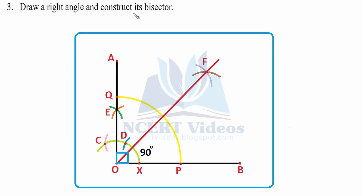Question 3: Draw a right angle and construct its bisection. First make a line segment at O, then draw a semicircle with a reasonable radius. Draw 60 degrees by opening radius OX, then from D another 60 degrees at C. The bisector between them gives 90 degrees. From D and C with the same radius you get point E — join it, and that is your 90 degree angle.